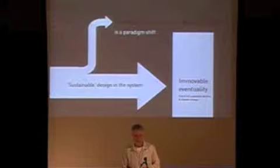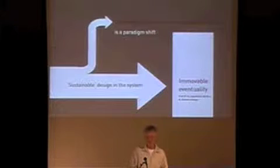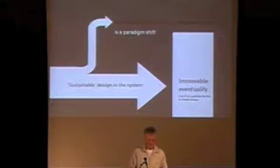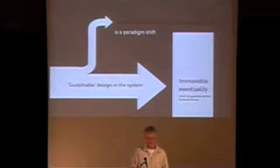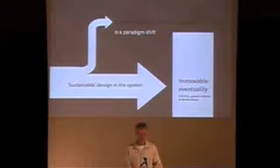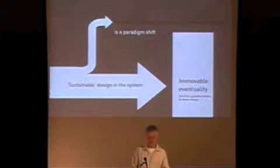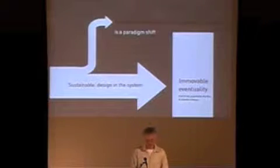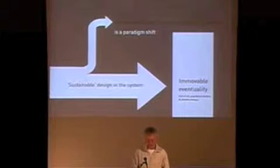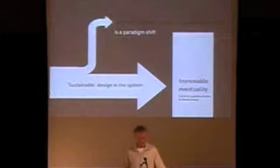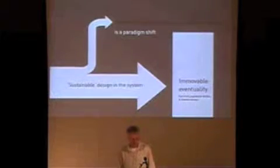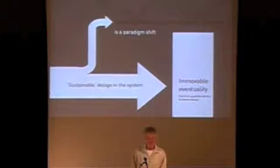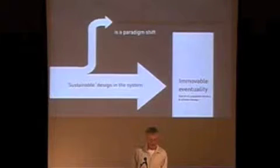What I'm going to propose here is that sustainable design in its current form is essentially trying to work within the existing system, and that is what I'm calling the immovable eventuality — and that immovable eventuality is the end of oil, population decline, and climate change.